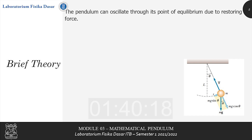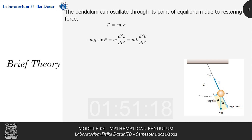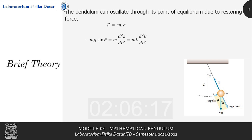From Newton's second law, force equals mass times acceleration. In this pendulum system, we have minus mass times gravitational acceleration times the sine of theta, which equals mass times the second derivative of s with respect to t (acceleration). We can also denote this as mass times the length of the string times the second derivative of theta over t.